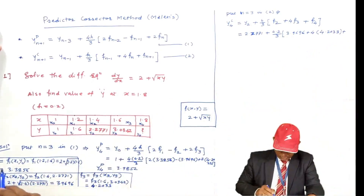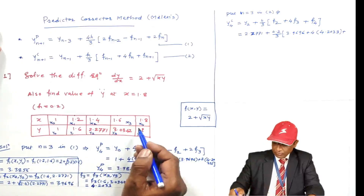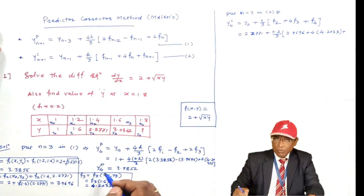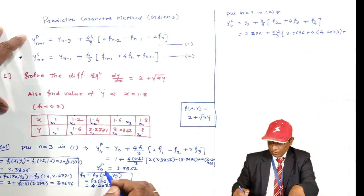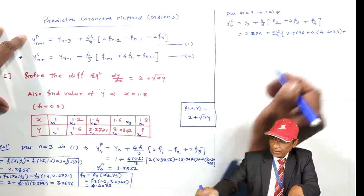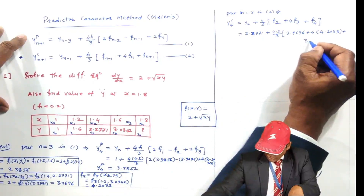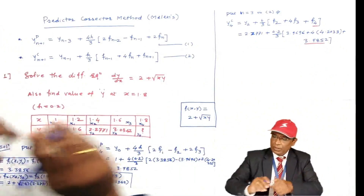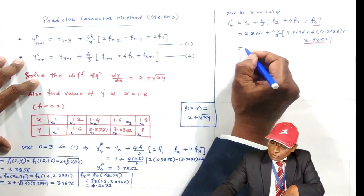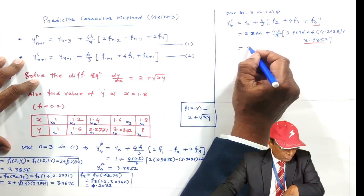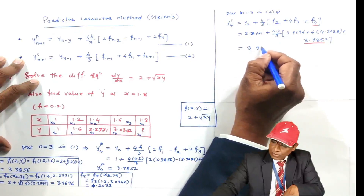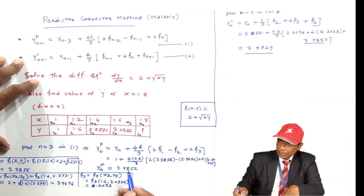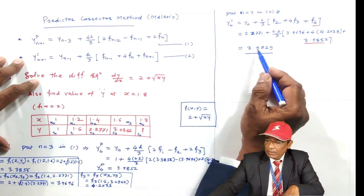F4 was not previously found because Y4 was not available. F4 uses the predicted value of Y at x = 1.8, which is 3.985. Substituting all values: YC4 = 2.271 + (0.2/3)[3.9696 + 4(4.2033) + F4]. The corrected value YC4 = 3.9729. The predicted value was 3.985 and the corrected value is 3.9729.